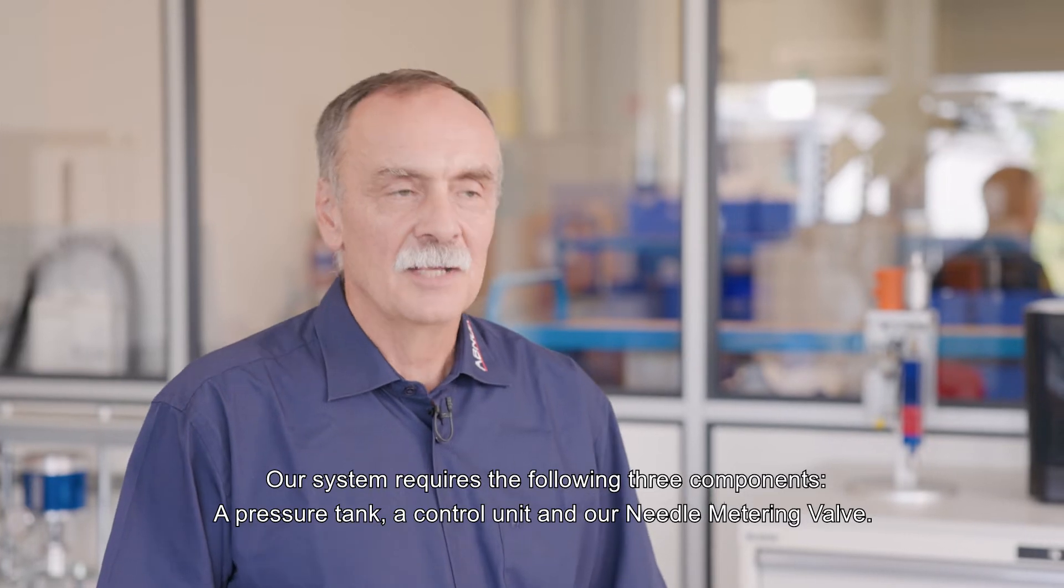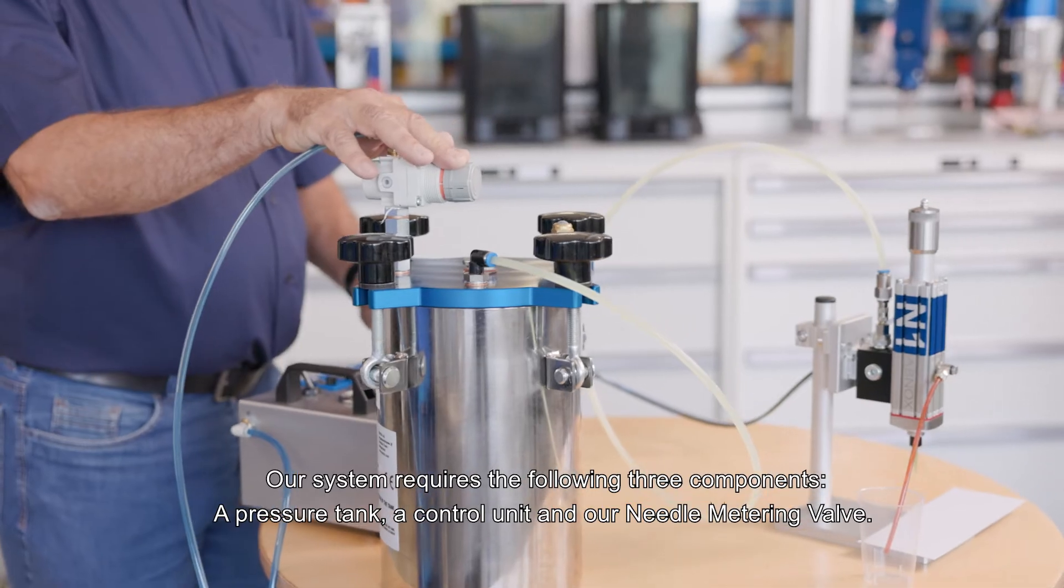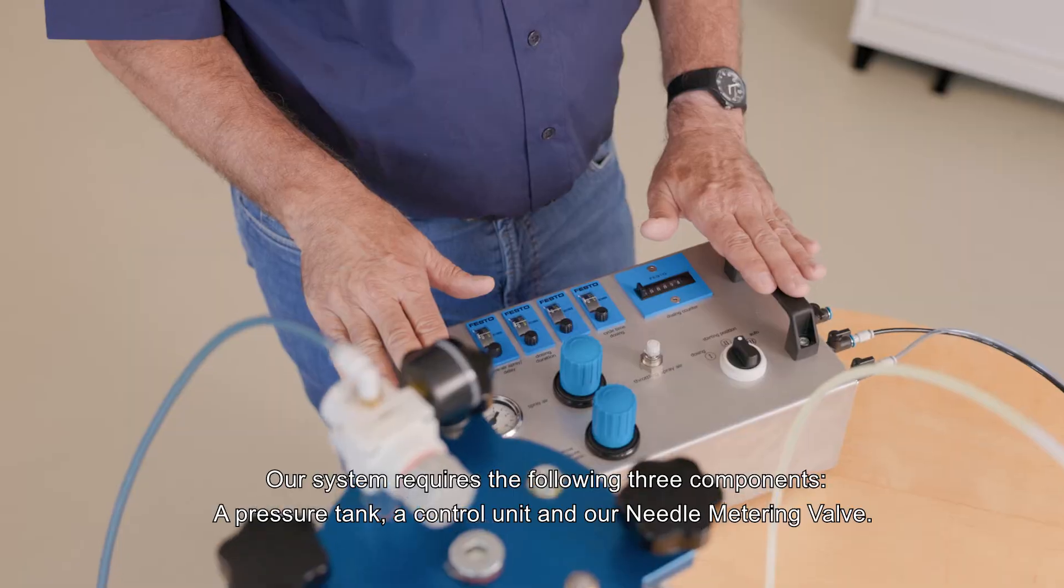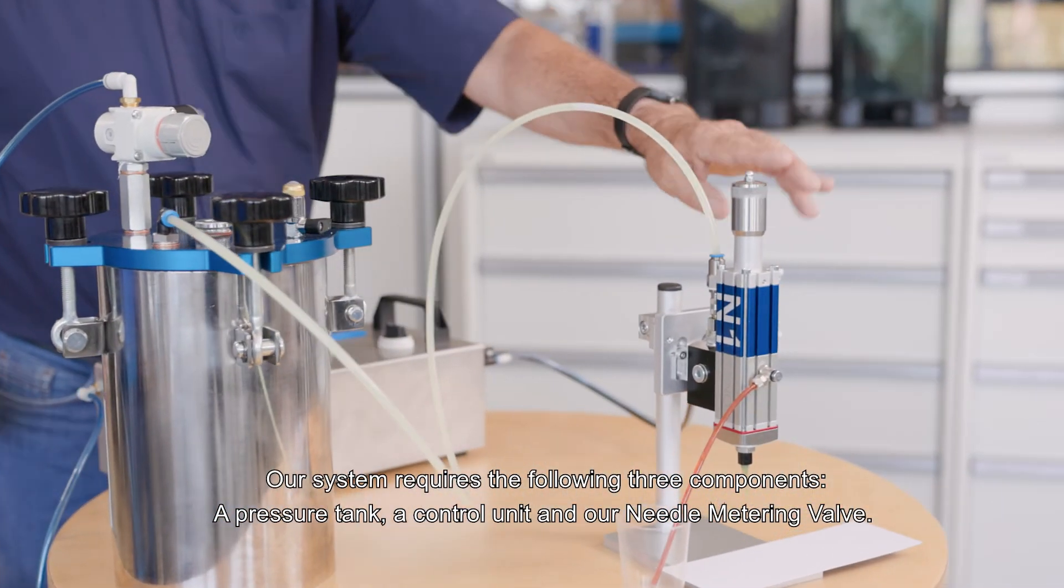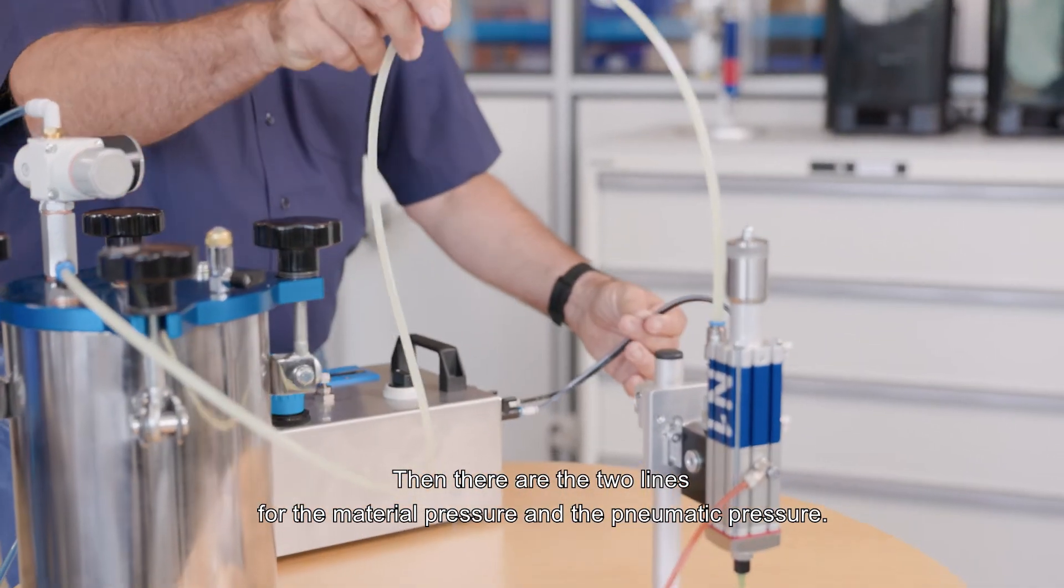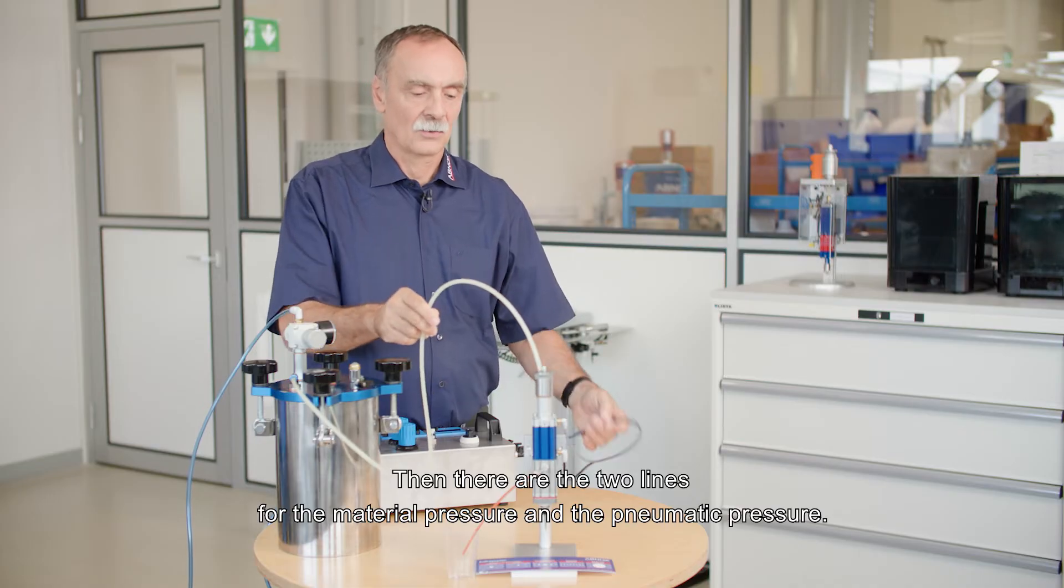Our system requires the following three components: a pressure tank, a control unit, and our needle metering valve. Then there are the two lines for the material pressure and the pneumatic pressure.